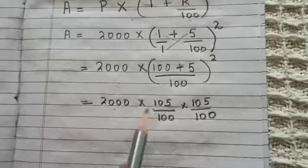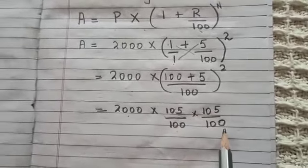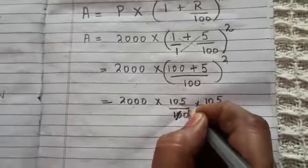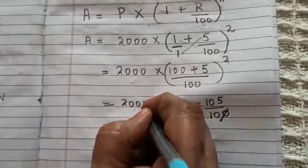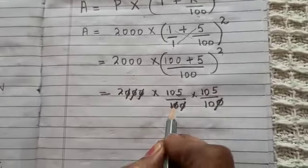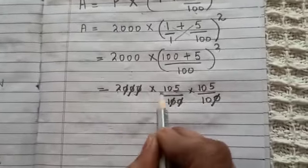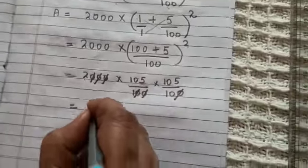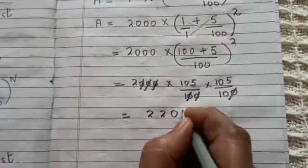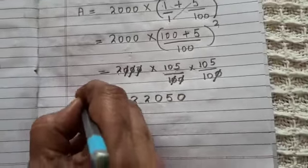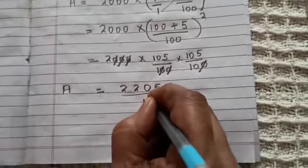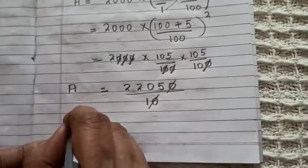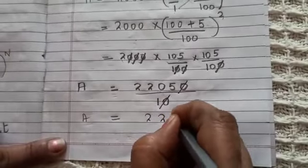So we have 2000 into 105 upon 100 into 105 upon 100. Now let's cancel the zeros — cancel three zeros from numerator and denominator. When we multiply 2 multiplied by 105 multiplied by 105 we get 22050. Dividing by 10 gives us the amount equal to rupees 2205.